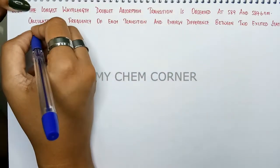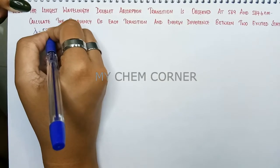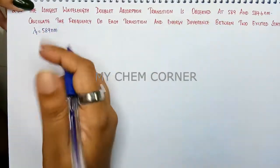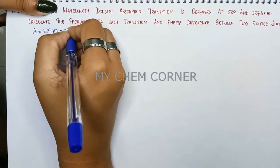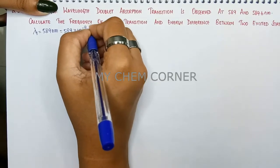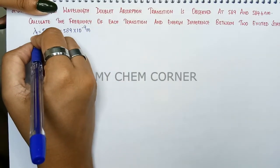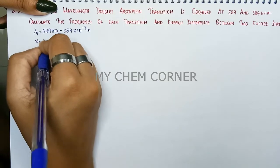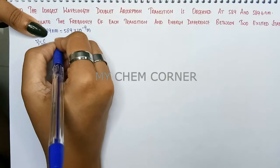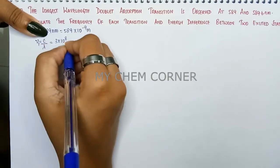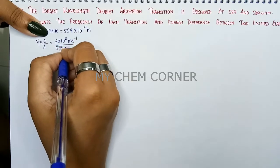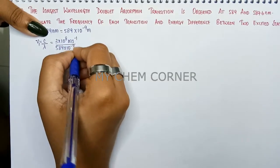Let's calculate the first wavelength as 589 nanometer. Since we are finding out frequency, we need to convert this to meters. So 589 into 10 to the power minus 9 meter. Formula for this is your frequency equals c by lambda. c is the velocity of light, so that is 3 into 10 to the power 8 meter per second divided by wavelength 589 into 10 to the power minus 9 meter.